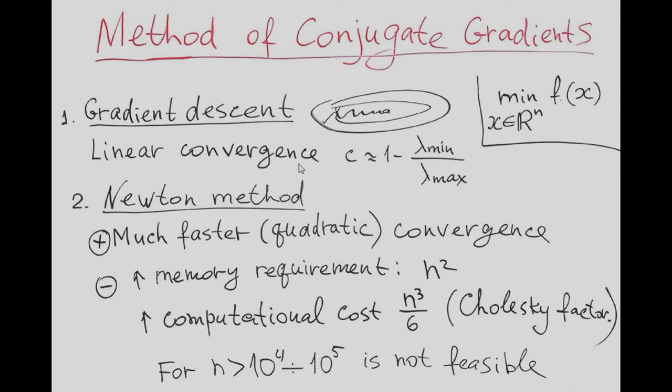Disadvantage of this method, like we learned, it may converge very slow when the function looks as a narrow valley. And the convergence rate, linear convergence rate of gradient method, is 1 minus ratio of minimal to maximal eigenvalue of the Hessian. So if this ratio is like 1 over 1000, the method may become converging really slow.